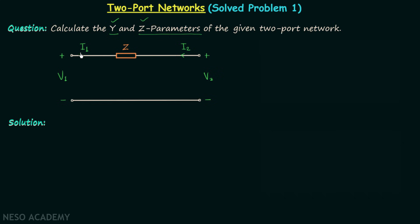When you focus on current i1, you will find it will be equal to the potential at this point minus the potential at this point divided by the impedance z. If I connect this point to the ground, then the potential at this point will be 0 volts, and therefore here potential will be v1 and here potential will be v2. Therefore current i1 will be equal to v1 minus v2